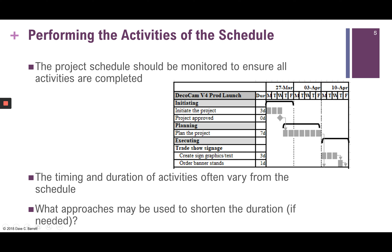Overlapping activities can be risky because the more you overlap, the greater the potential for mistakes or rework. It's also more difficult to manage. Another option is to add more resources to your project — for example, if one person is assigned to create sign graphics and it takes three days, adding another person might reduce that to two days. Adding more resources is often called crashing.